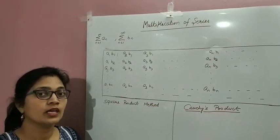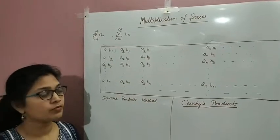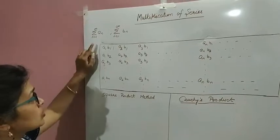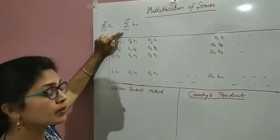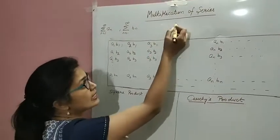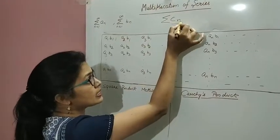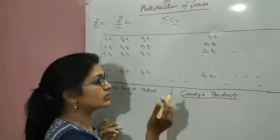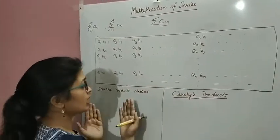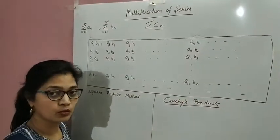Good morning students. Today, in the chapter of arbitrary series, we are going to discuss about the multiplication of series. Suppose you have given two series, sigma-an and sigma-bn. If we multiply both series, we have a new series. Suppose that series is sigma-cn. Now, what do we consider the first term and second term of this series? We have two different methods by which we can define the product of two series.